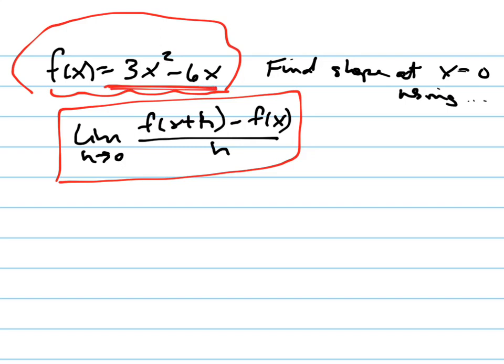What we're really doing, this is a quadratic. Notice that it goes through 0, 0. It goes through, let's see, the vertex is negative b, which is 6, all over 2a, 3, which is 1.